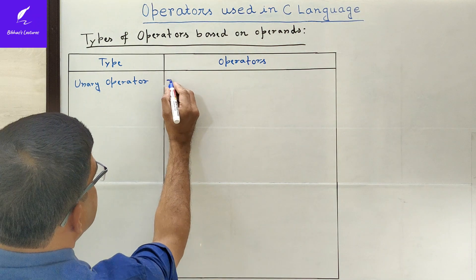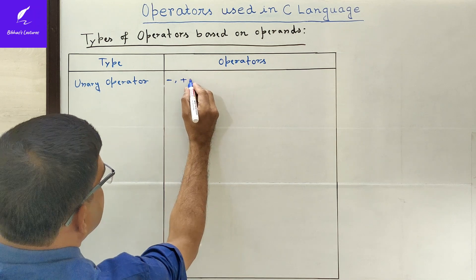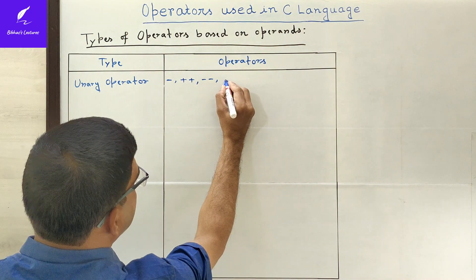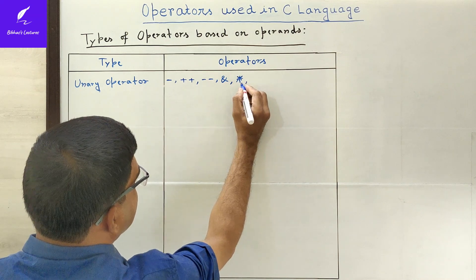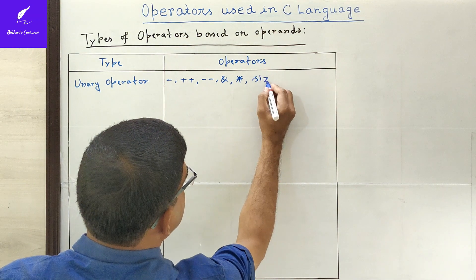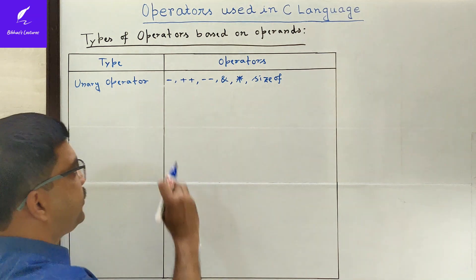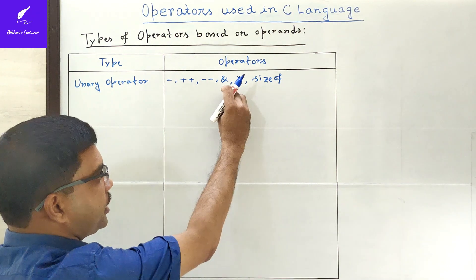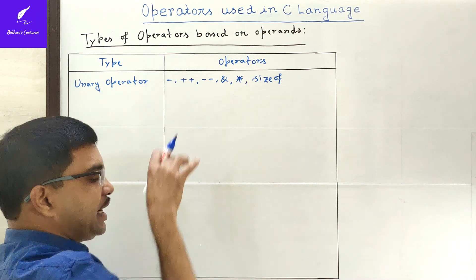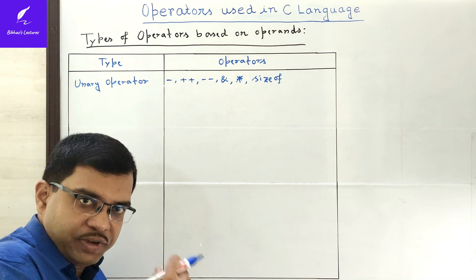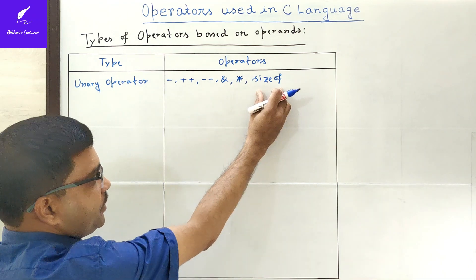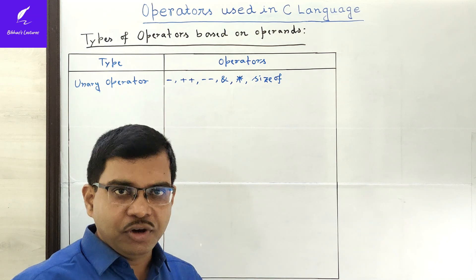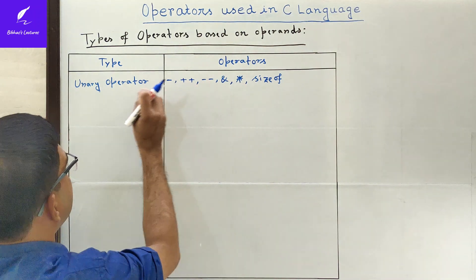Examples of unary operators include: unary minus, increment operator (++), decrement operator (--), address-of operator, value-at-address operator, and sizeof operator. The address-of operator is used to find the address of a variable. The value-at-address operator retrieves the value stored at a particular address. The sizeof operator helps find the size of any value, data type, or variable. These are all unary operators.